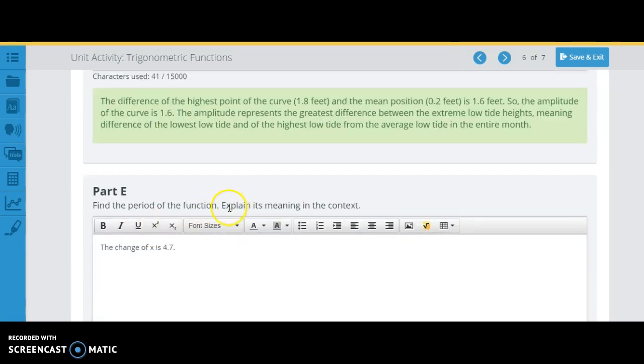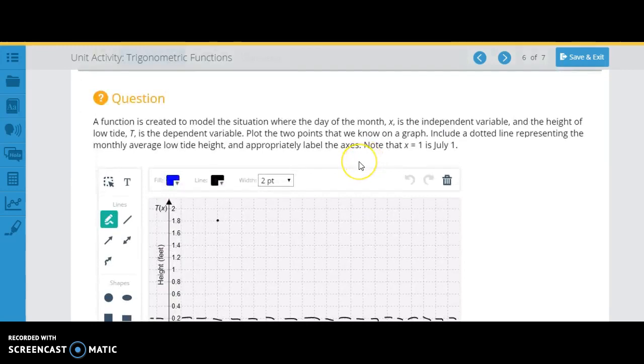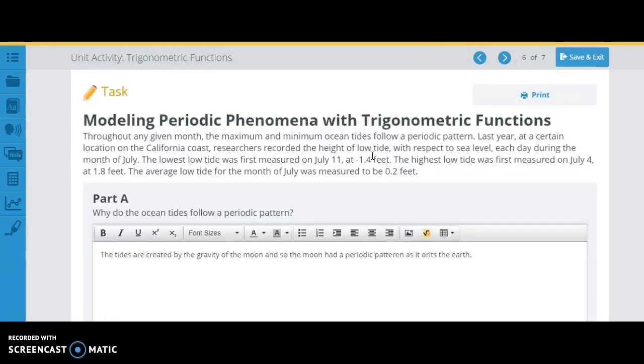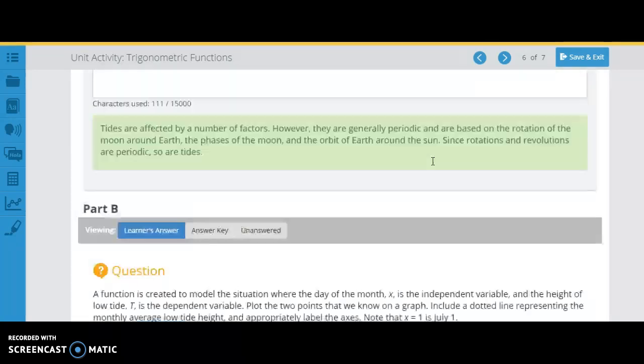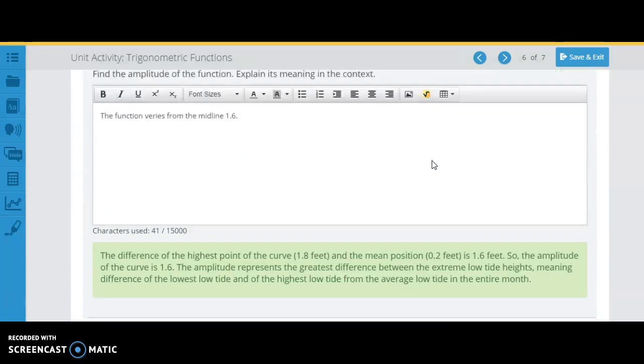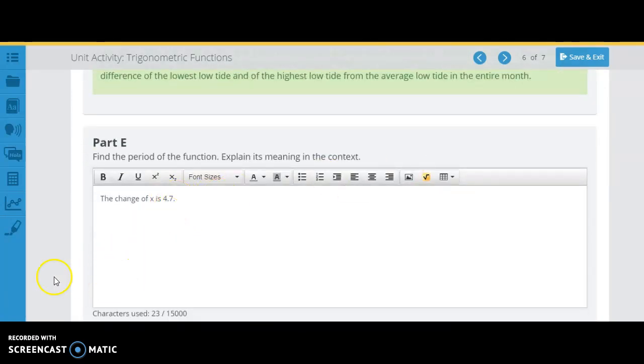Okay, now find the period of the function and explain what it means in the context. And so we saw that here, the period is where we go from one low tide of the lowest to the other lowest low tide. So if we look back here, it was saying that we started with the high one on July 4th, and then the lowest one on July 11th. So between there is 7 days, right? So from the high one to the low one is 7 days. And so if it's following a pattern, to go back to the high one again would be another 7 days. And so our period is going from one high, which is now going to be 14 days. So that's going to be 14.